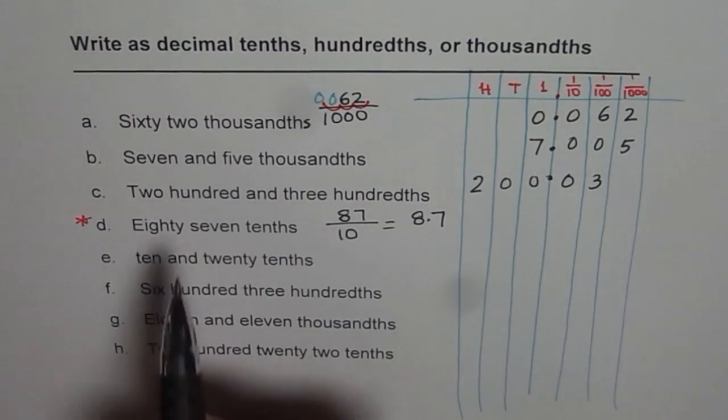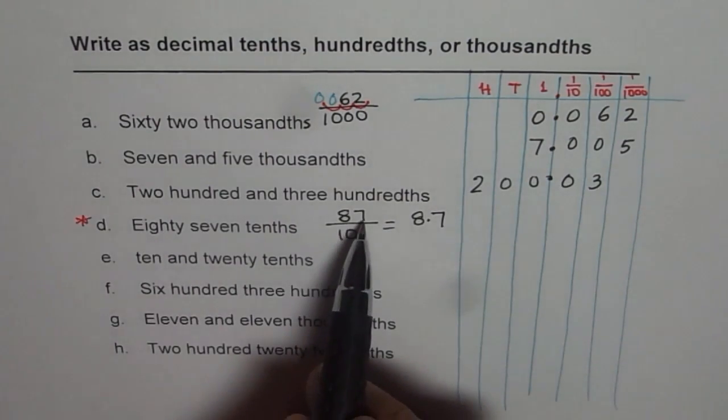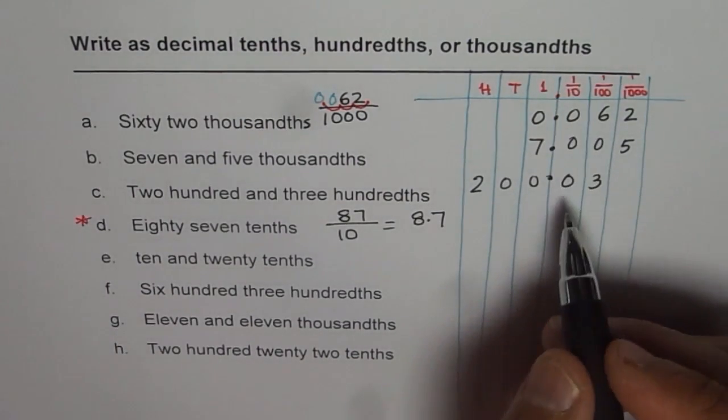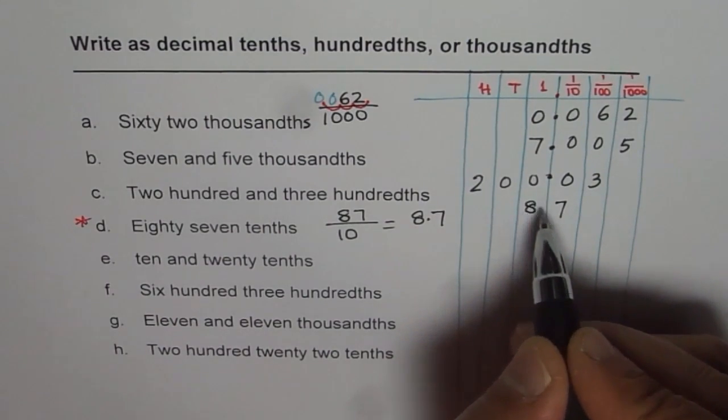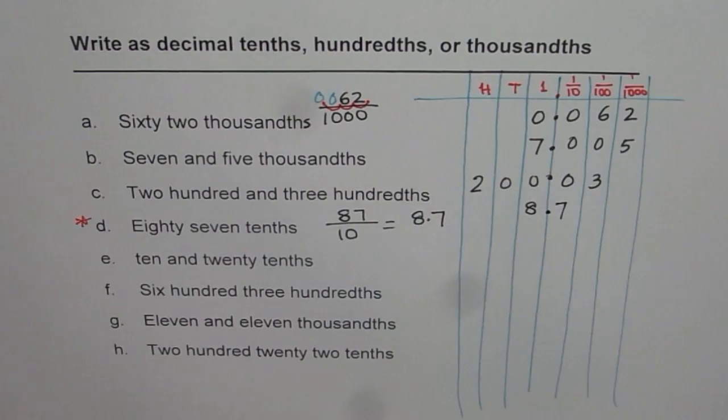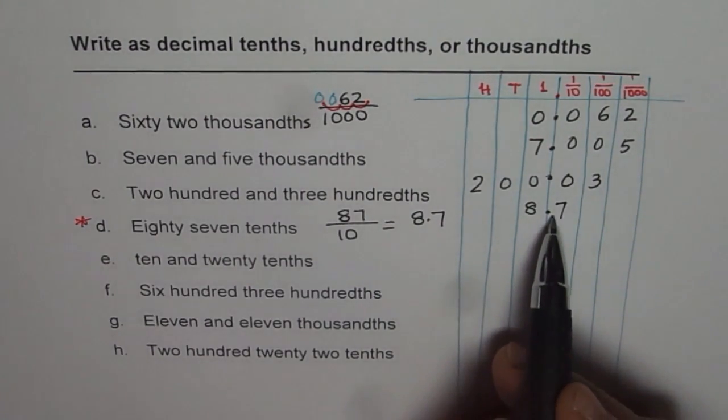Eighty-seven tenths really means that eighty-seven should end at tenths place. So if seven has to come here, eight will be there with the decimal point. This is another way of looking into it. You will always get it right.